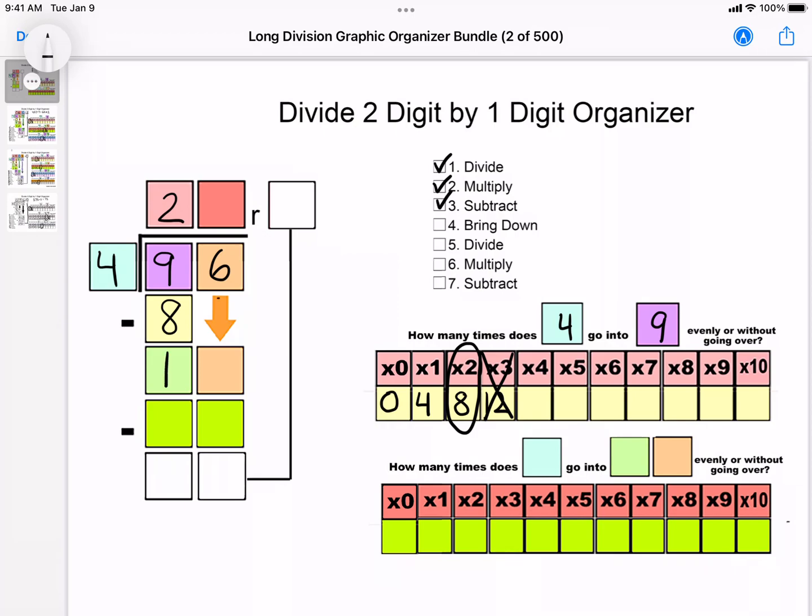Now bring down the 6, and then we start the process again. How many times does 4 go into 16 evenly, or without going over? So we count by 4 until we get to 16. It's a perfect match.